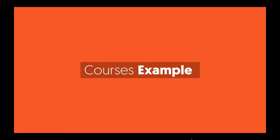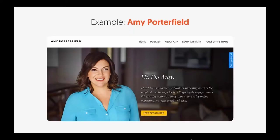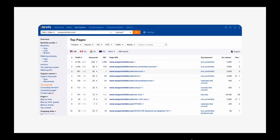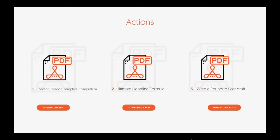For course examples: Amy Porterfield — you've all heard about her. She has YouTube ads talking about courses, she has content, and she's done really well from her podcast. From there she drives people into buying her products. If you look at her top pages, a lot of it's related to her podcast — her number two page after her homepage is her podcast. So some action items: there's a content creation template compilation, an ultimate headline formula, and a roundup post draft. I want you to do those three things, and once you do, you'll be creating content. Next week we're going to be building links to it.